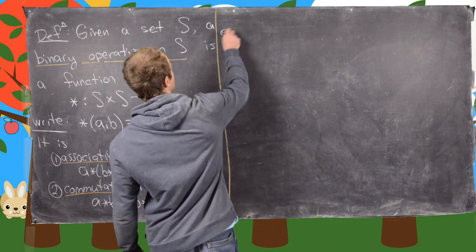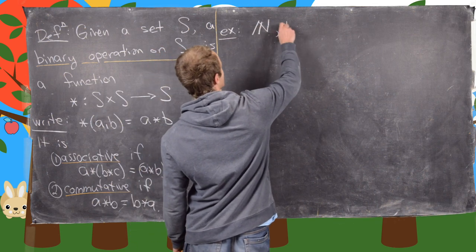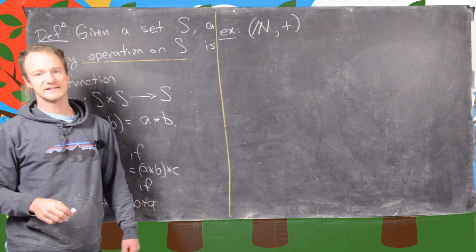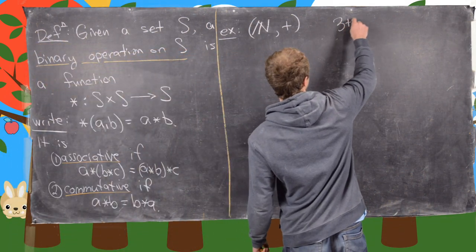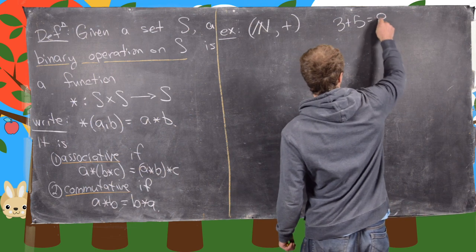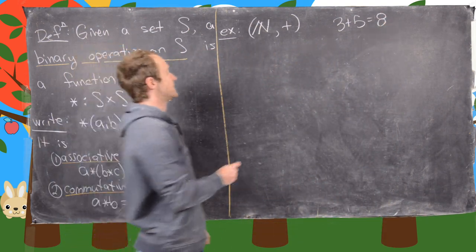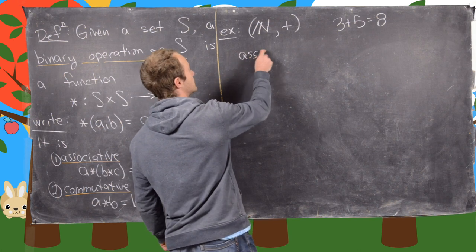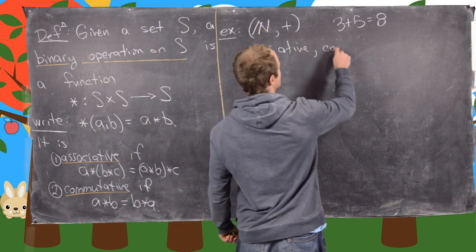Okay, so let's look at some examples. So let's say our set is the natural numbers and our operation is addition. And so in other words, we have just like normal addition. So for example, three plus five equals eight. So notice that this is associative and it's commutative.